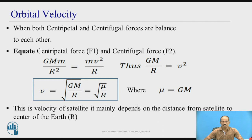Orbital velocity: when both centripetal and centrifugal forces are balanced, that means F1 and F2 are equal — one due to kinetic energy and the other due to gravitational force. Equating the two: G·M·m / R² = m·v² / R. One R from the denominator cancels on both sides, leaving G·M / R = v². So, v² = G·M / R.